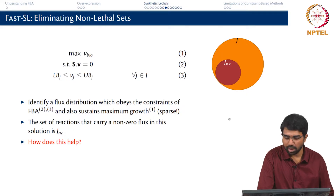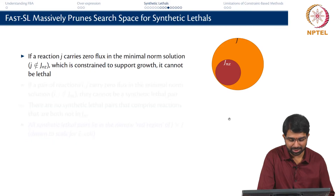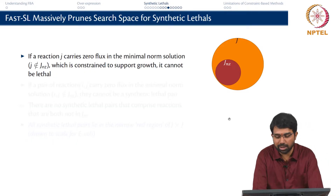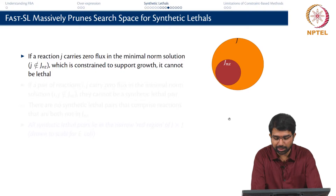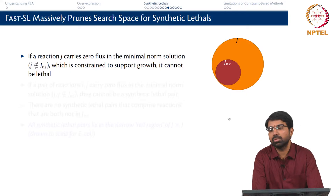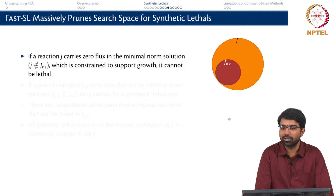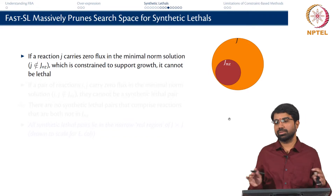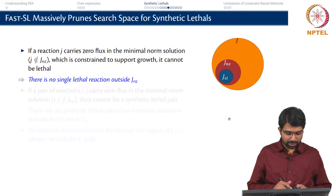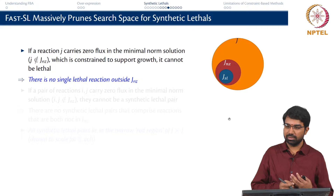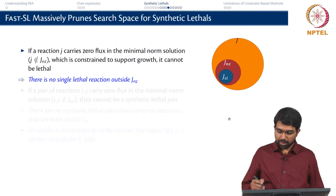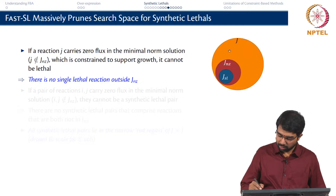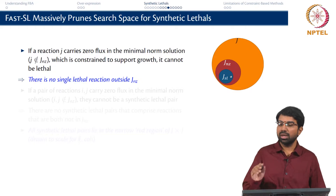We have some very interesting observations, although it seems almost obvious in hindsight. If a reaction J carries zero flux in the FBA solution which is constrained to support growth, it cannot be lethal. This is a very simple, almost obvious thing: if a reaction is already carrying no flux, removing it is not going to kill the organism. That means there is no single lethal reaction outside of JNZ. All these reactions that are not in the dark portion are not carrying a flux.